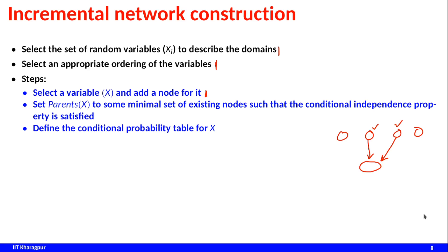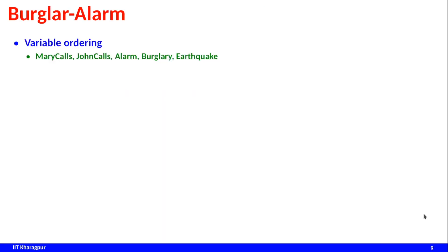Then we define the conditional probability table. If we proceed in this manner we can construct the network, but the key thing is we have to select the appropriate ordering of the variables, because if we do not choose the proper ordering then it can actually be pretty complex.